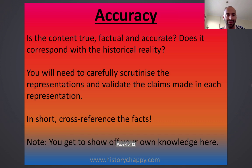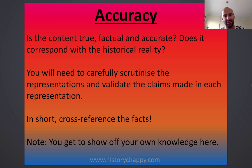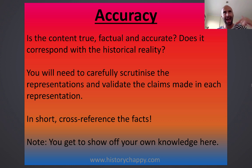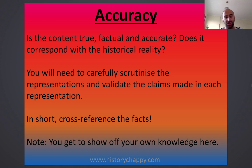What do they mean? Accuracy — no surprises there. Is the content, is what it's saying true? Is it factual and is it accurate? Does it correspond with historical reality? So what the representation is saying — did it actually happen? If so, did it happen as the representation is indicating that it did? You need to carefully analyse and scrutinise the representations, all three of them, so you can accurately validate the claims that each of them is making.